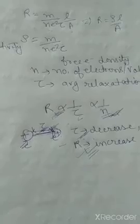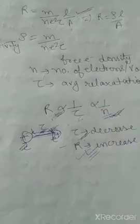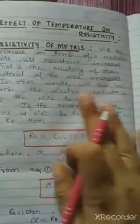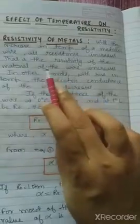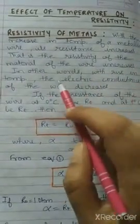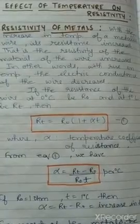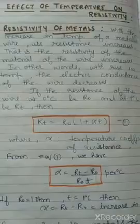This formula is very important. If you know this formula, you can very easily discuss resistivity or resistance. With the increase in temperature, the average relaxation time starts decreasing, due to which resistance will increase and resistivity will also increase. With the rise in temperature, the electric conductance of the wire decreases — conductance is the reciprocal of resistance. So when resistance increases, obviously conductance decreases.